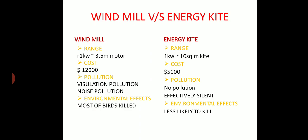Coming to pollution caused by power generation: In windmill, visual pollution and noise pollution are the major disadvantages, whereas in kite generation there is no such problem - no pollution, effectively silent, and quiet operation. Regarding environmental effects, windmill kills most birds, whereas energy kite is less likely to kill birds.